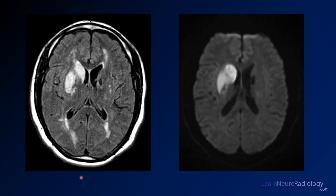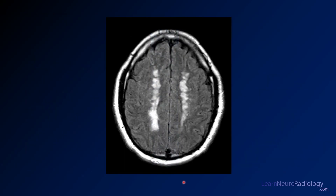On the MRI, on the left you have a FLAIR image and on the right you have diffusion. You can clearly see the FLAIR abnormality in those same areas as the CT — very FLAIR-bright and very bright on diffusion — so we're worried those are infarcts. Looking a little bit higher, in the border zones between the ACA and MCA territory, you see a number of areas of FLAIR abnormality, suggesting multiple border zone infarcts over time.